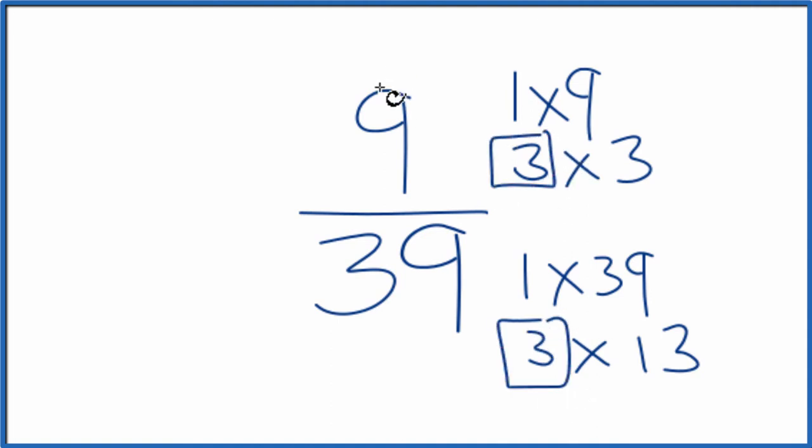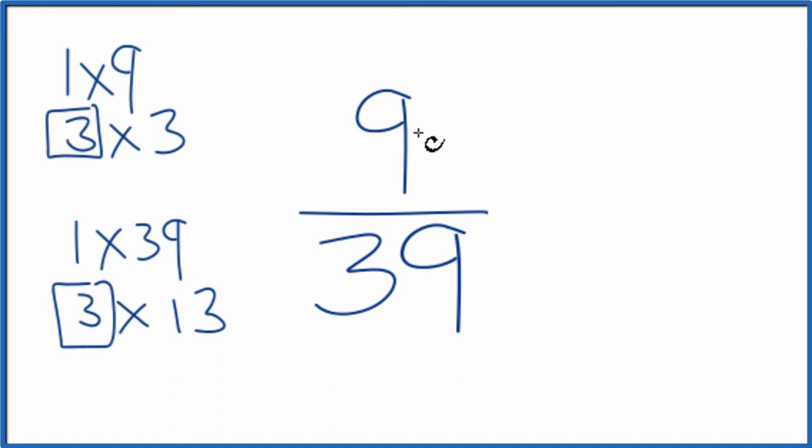So we'll divide 9 by 3, 39 by 3, and we'll simplify 9 over 39. Let's move these over here. So 9 divided by 3, that's just 3. And then 39 divided by 3, that's 13.